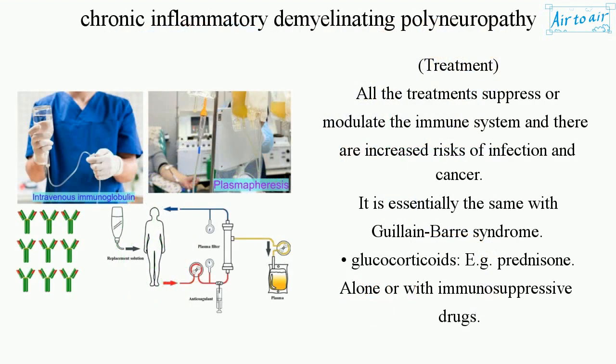Treatment: All treatments suppress or modulate the immune system, and there are increased risks of infection and cancer. Treatment is essentially the same as with Guillain-Barré syndrome. Glucocorticoids, e.g. prednisone, may be used alone or with immunosuppressive drugs.